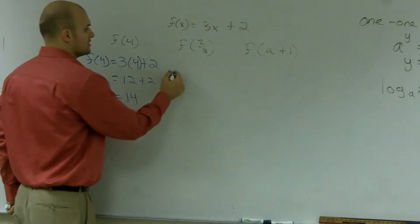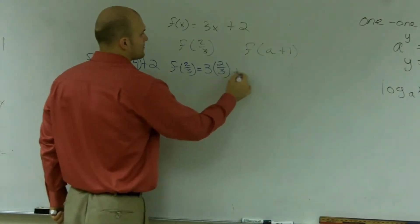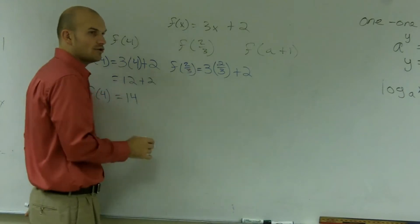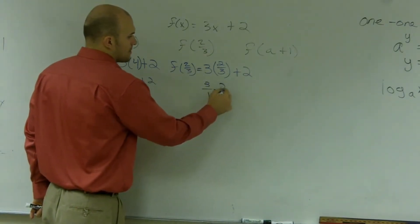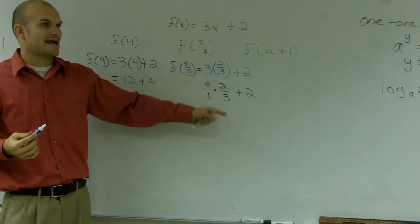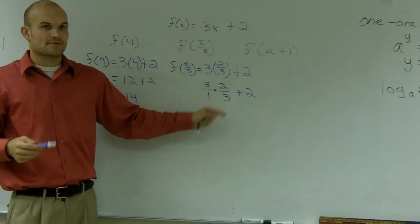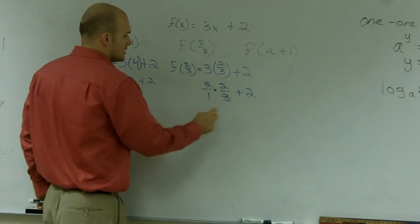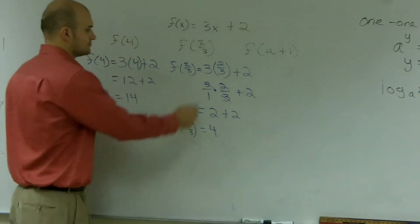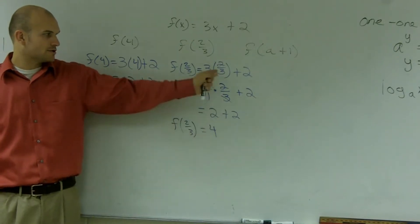The next one, f of 2 thirds. I'm going to do the exact same thing — plug in 2 thirds in for x. A lot of you probably forgot how to do this, right? How do you multiply a whole number times a fraction? Change your whole number to a fraction. You can say I'm multiplying by 3 and dividing by 3 — they cancel out. Or you can just say 3 times 2 is 6, 1 times 3 is 3, 6 divided by 3 is 2. Either way, your answer gives you 2 plus 2. So f of 2 thirds equals 4. That is, 3 times 2 thirds is equal to 2, then plus 2 is 4.